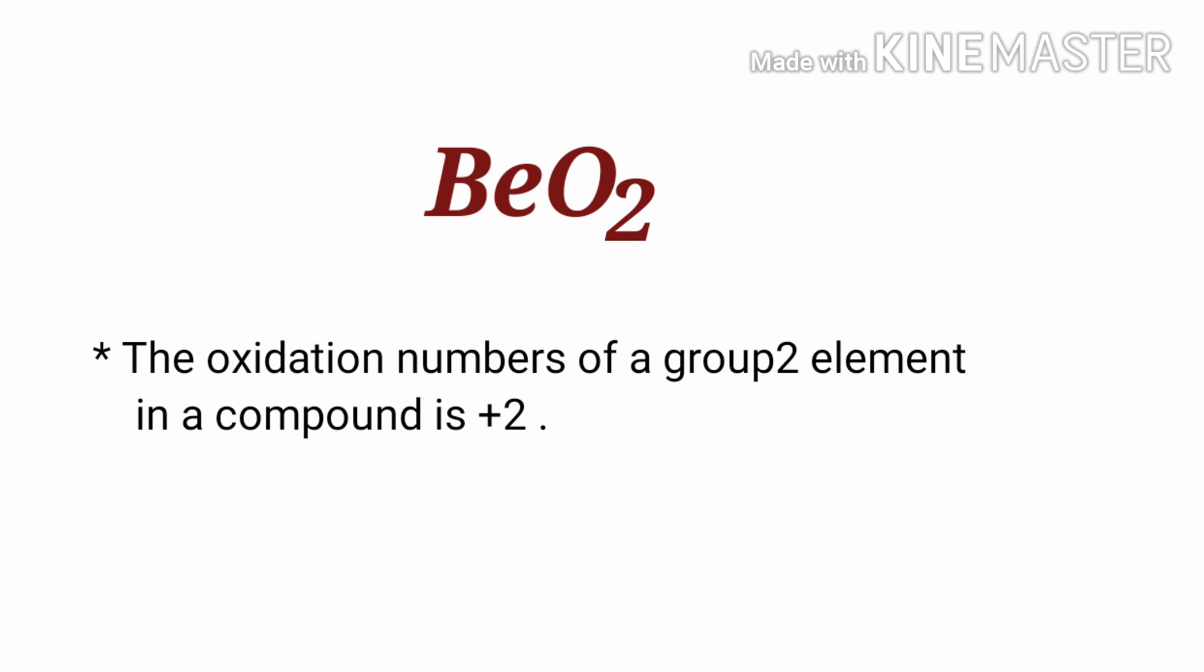By the rules of assigning oxidation numbers, the oxidation number of a group 2 element in a compound is +2. Beryllium is a group 2 element, so the oxidation number of beryllium is +2.